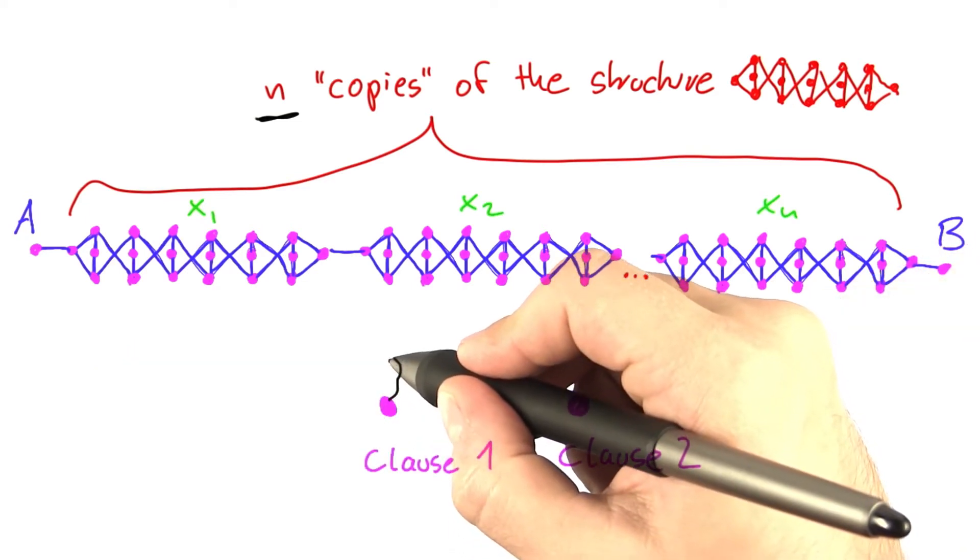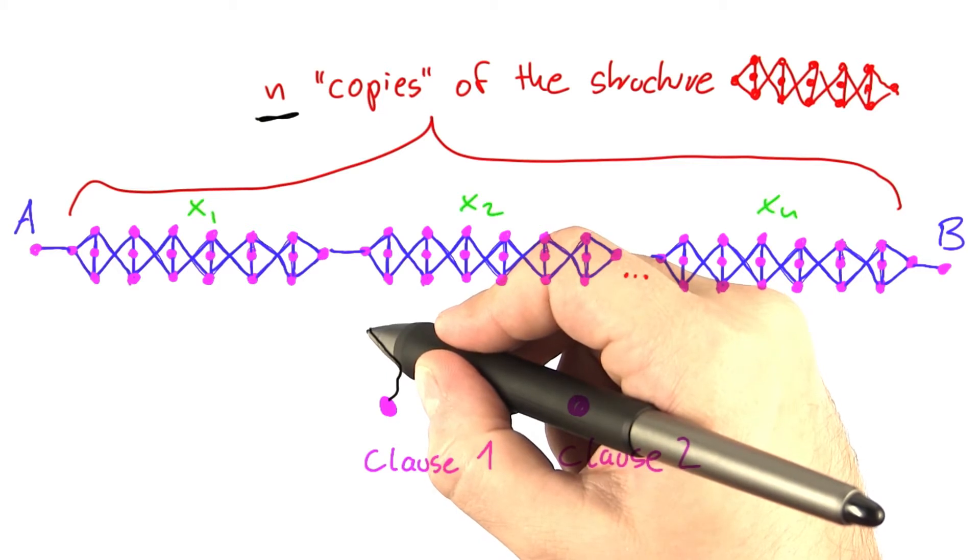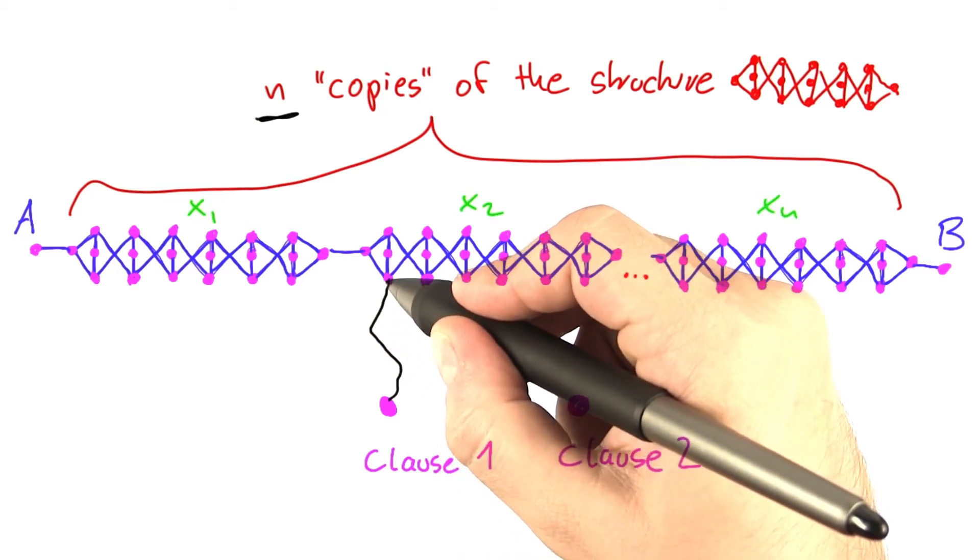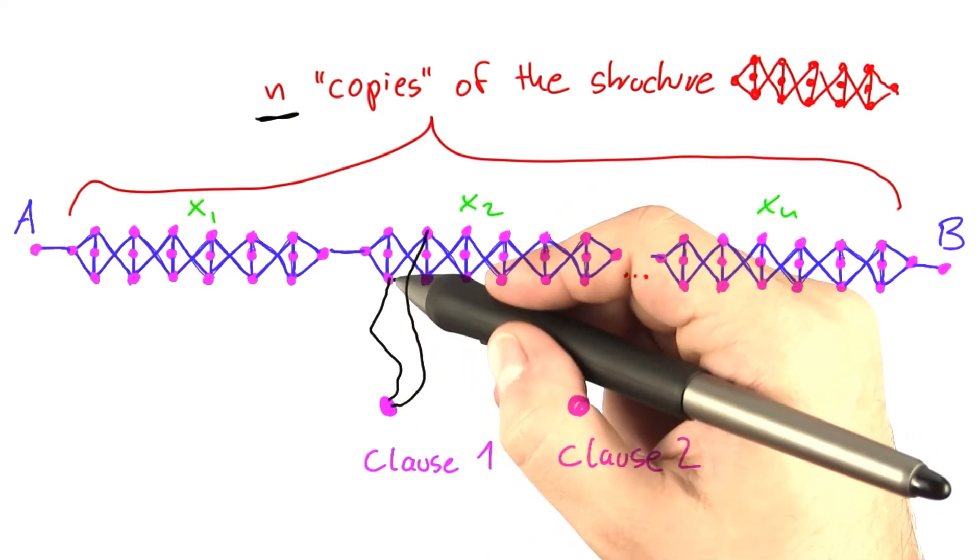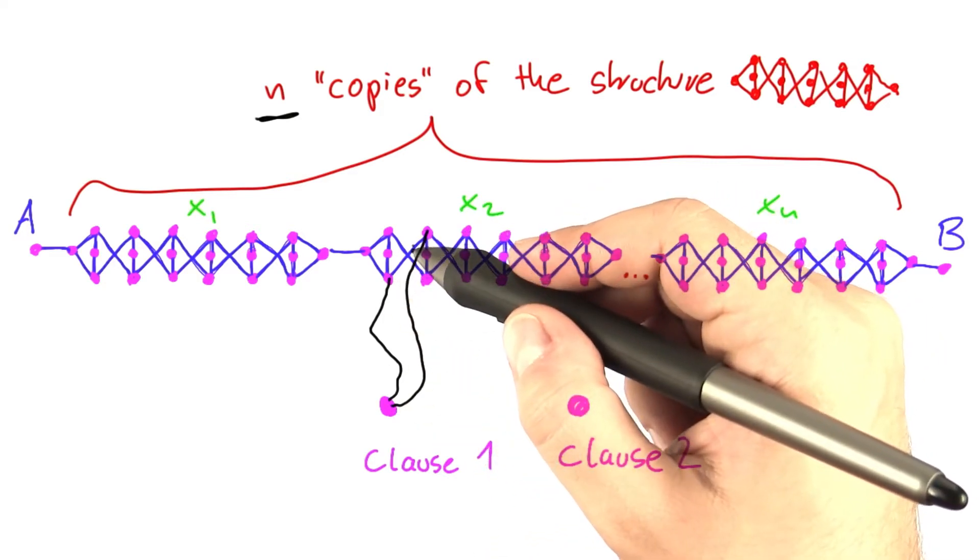So what about a construction that looks like this? I connect the vertex that represents the clause to this one here, and I connect it to this vertex here, and I connect it to this vertex here.